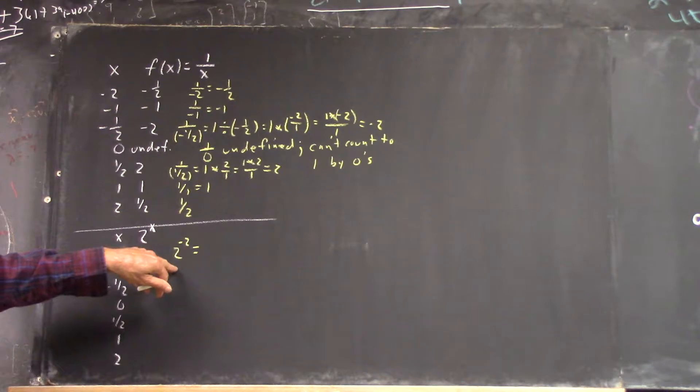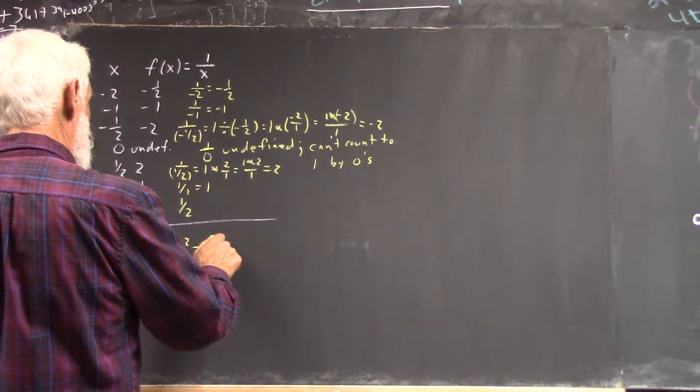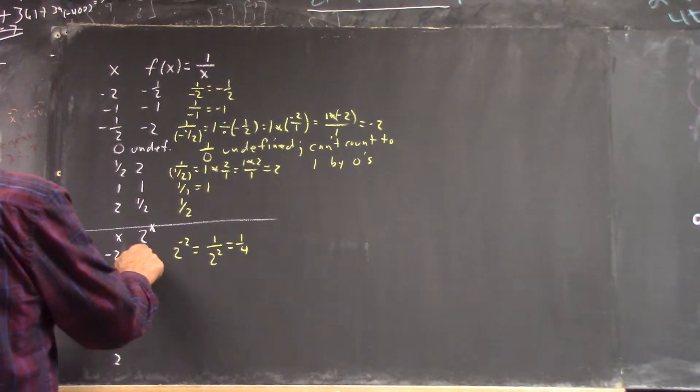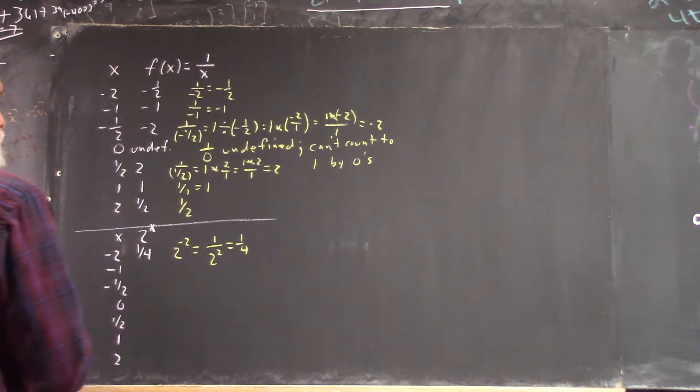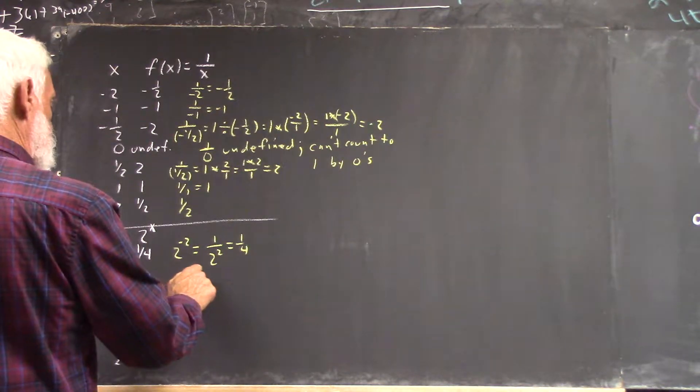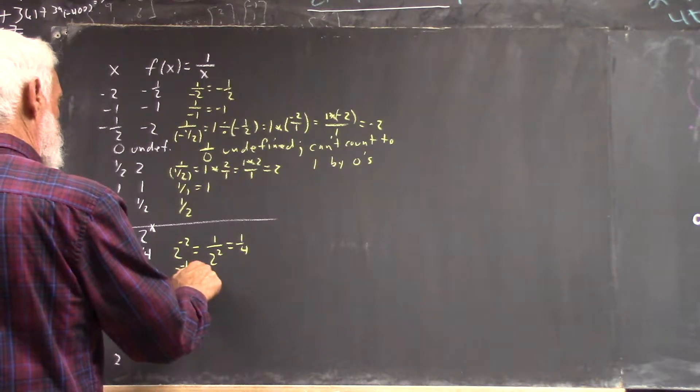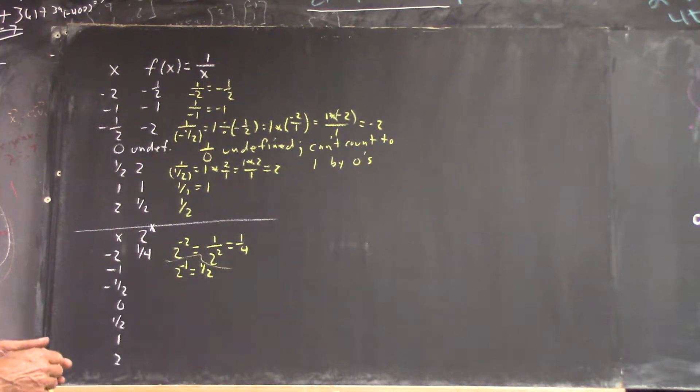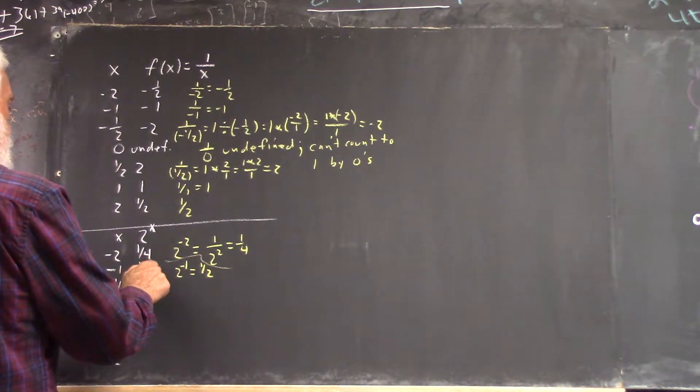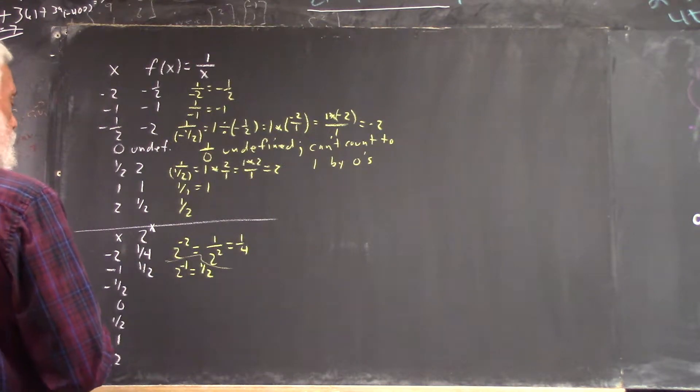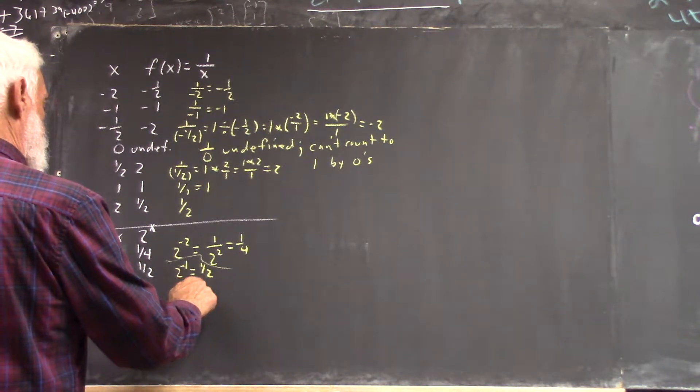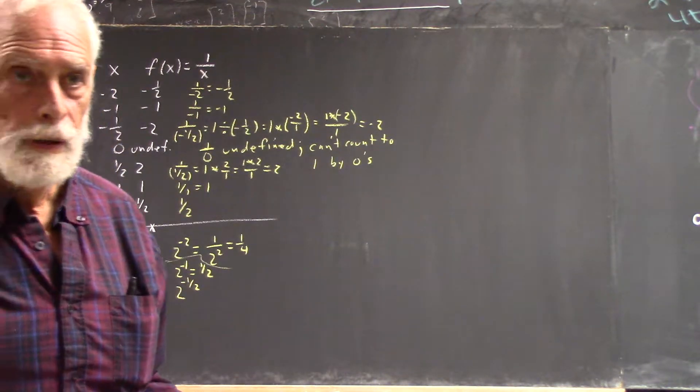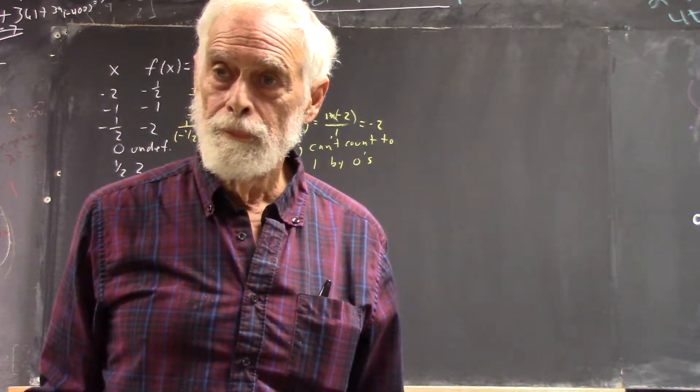We get 2 to the negative 2. What's that equal? It equals 1 over 2 squared, which is 1 fourth. So we've got 1 fourth. 2 to the negative 1 is 1 half. 2 to the negative 1 half. Now what's the 1 half power of a number?